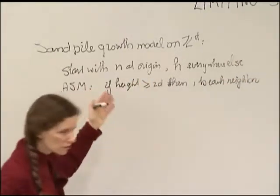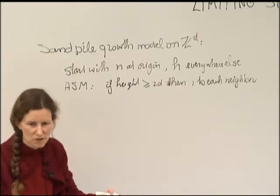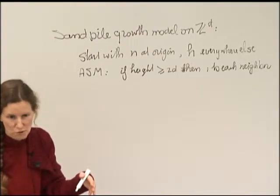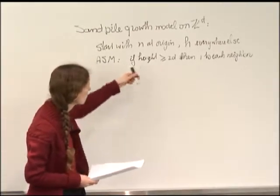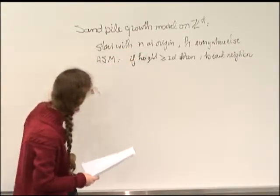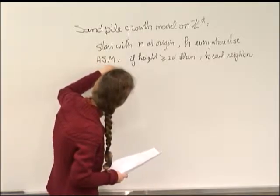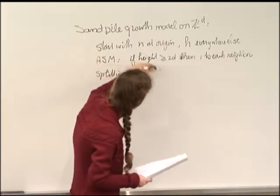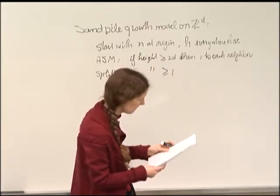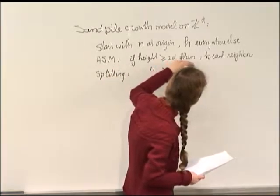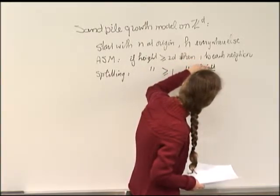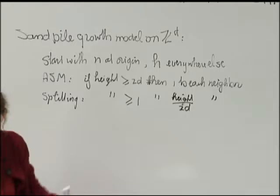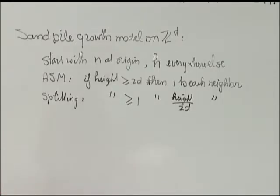If it's an abelian sand pile model, I look at my grid and say: is there anyone who has more than 2D? Then you should give one to each neighbor — that's called abelian toppling. If we do splitting, then we say if the height is at least 1, then we do a fraction — you split the entire content of that site and one equal portion goes to each neighbor.